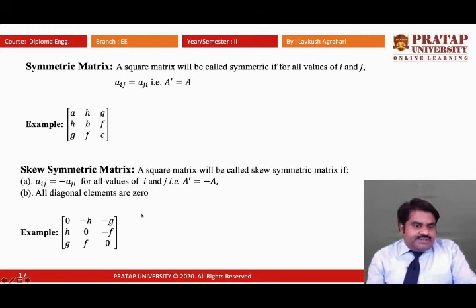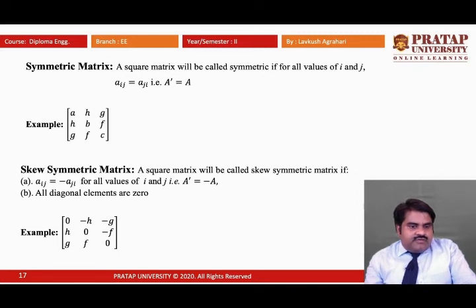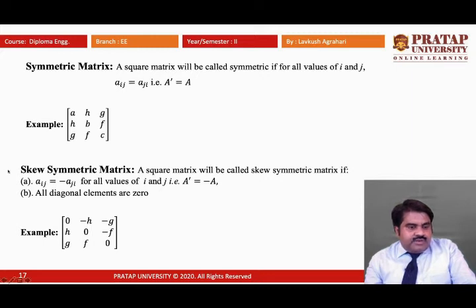The skew symmetric matrix: a square matrix is called a skew symmetric matrix if for all values of i and j, Aij equals -Aji — that is, if the transpose of the matrix equals the negative of the matrix. An additional condition: all diagonal elements of a skew symmetric matrix must be equal to zero. An example is given.